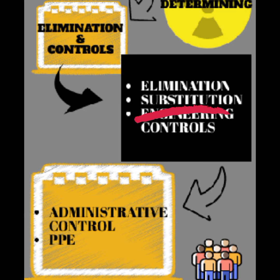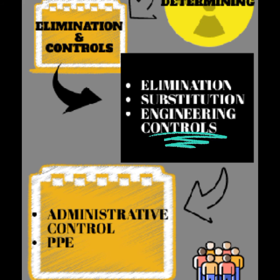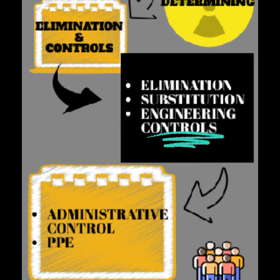Next is engineering controls — the third most effective means of controlling hazards. Engineering controls do not eliminate hazards but rather isolate people from hazards. Capital costs tend to be higher, but they may reduce future costs. Engineering controls include designs or modifications to plants, equipment, ventilation systems, and processes that reduce the source of exposure.